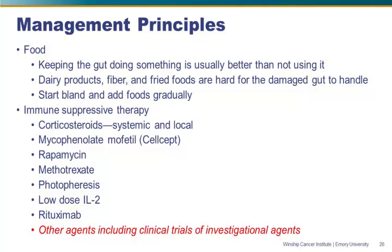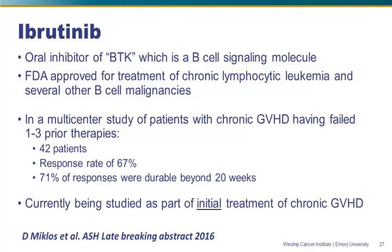I'll finish with a couple of exciting new agents in the area of graft-versus-host disease. Ibrutinib is an oral inhibitor of Bruton's tyrosine kinase, which is a B-cell signaling molecule. This drug is FDA approved for a variety of different B-cell malignancies, but it is also clearly active in chronic graft-versus-host disease. Very exciting preliminary data presented at the last national hematology meeting in December showed a very high proportion of patients achieving durable responses. We are now participating in a large multicenter randomized trial looking at ibrutinib as part of initial treatment for chronic GVHD, randomizing patients to steroids with or without ibrutinib.